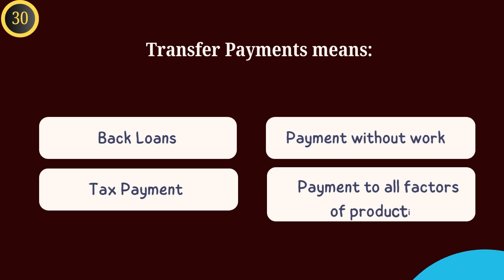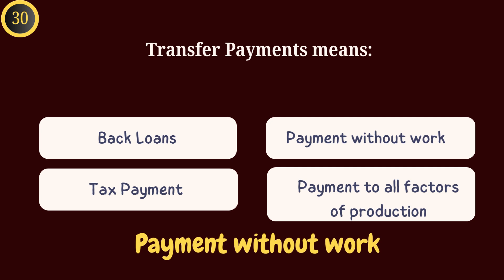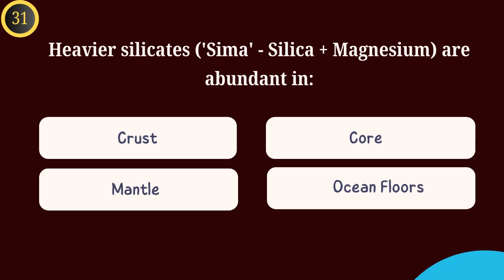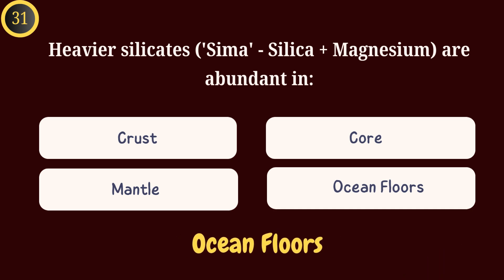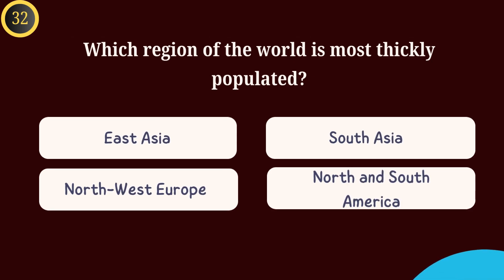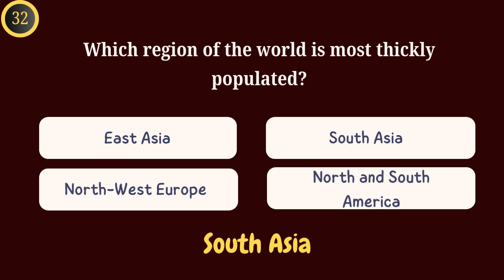Question 30: Transfer payments mean — Answer: The payment without work. Question 31: The heavier silicates named as Sima (Silica plus Magnesium) are most abundant in — Answer: Ocean floors. Question 32: Which of the following regions of the world is most thickly populated? Answer: South Asia.